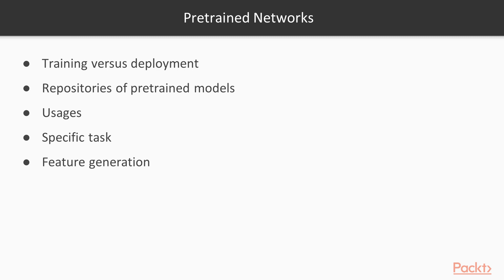There are two main cases where using pre-trained neural networks can be extremely convenient. The first case is when your task has already been solved — for example, if you want to conduct image captioning or text classification, you can use already existing neural networks. The second case is when your task is fairly different from what has been done but is close. Then you can use pre-trained models to generate features which you can later use with deterministic or simple machine learning models.